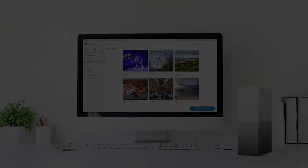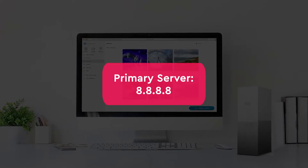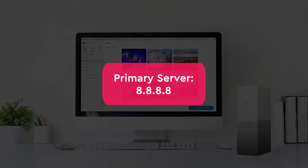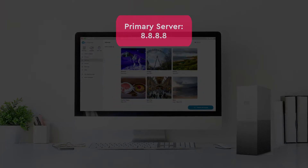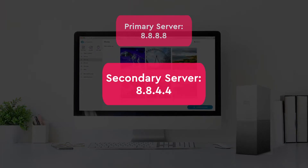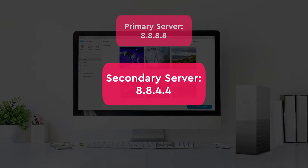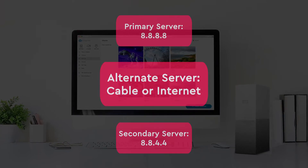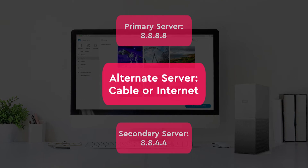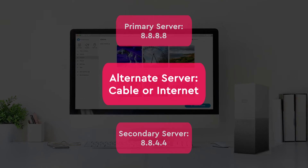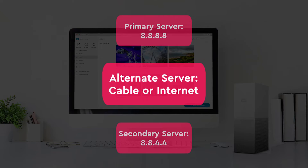In this video, we'll be using the IP address 8.8.8.8 to connect to Google's primary DNS server and 8.8.4.4 to connect to their secondary DNS server. Your cable TV or internet provider's DNS server IP address can be used as your alternate. Keep in mind that these procedures will vary from router to router. Consult your router's manufacturer or your internet service provider for assistance.